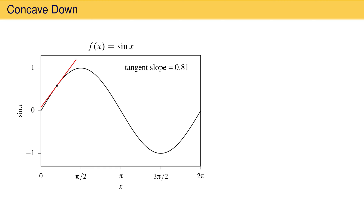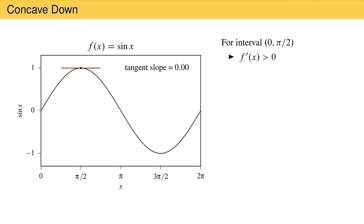As x increases, the first derivative remains positive, but becomes smaller at each successive value of x until a critical point is reached at pi over 2. From 0 to pi over 2, the first derivative is always positive, but the change in the first derivative is negative as x increases. The second derivative of sine x is the rate of change of the first derivative, and so the second derivative is negative in this region.